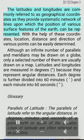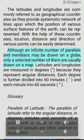The latitudes and longitudes are commonly referred to as geographical coordinates as they provide a systematic network of lines upon which the position of various surface features of the Earth can be represented. With the help of these coordinates, location, distance and direction of various points can be easily determined. Although an infinite number of parallels and meridians may be drawn on a globe, only a selected number of them are usually drawn on a map. Latitudes and longitudes are measured in degrees because they represent angular distances. Each degree is further divided into 60 minutes and each minute into 60 seconds.